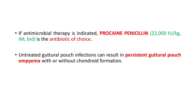If antimicrobial therapy is indicated, procaine penicillin at 22,000 international units per kilogram IM BID is the antibiotic of choice. Untreated guttural pouch infection can result in persistent guttural pouch empyema with or without chondroid formation.